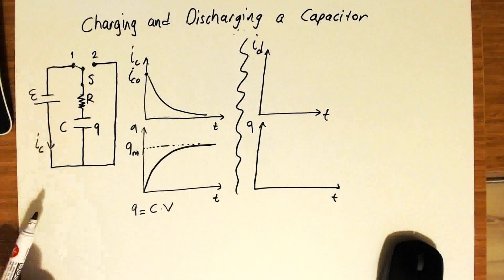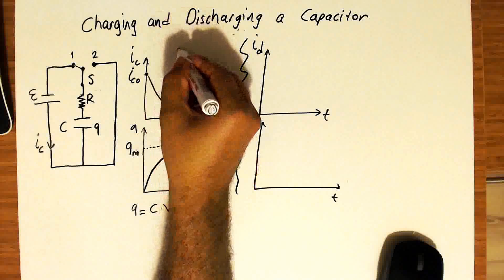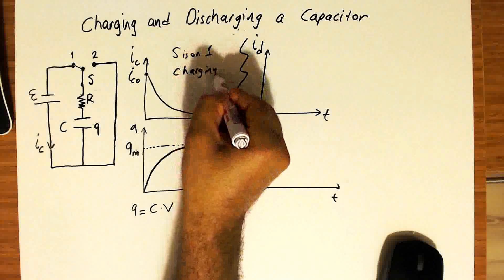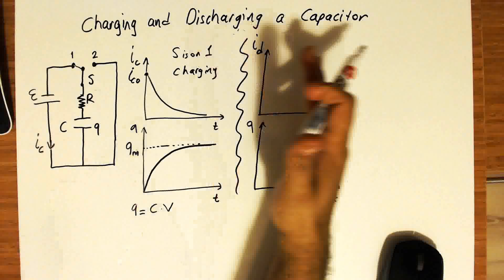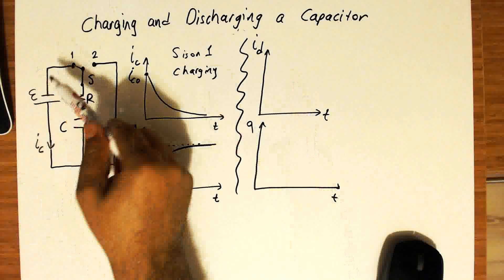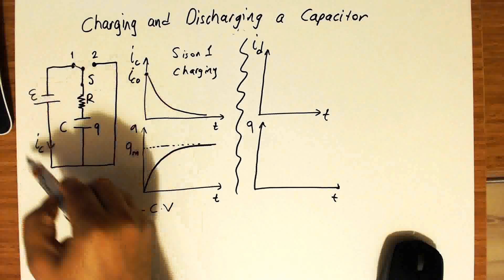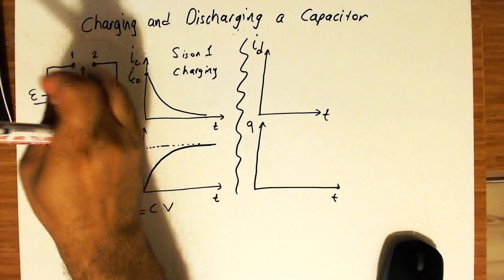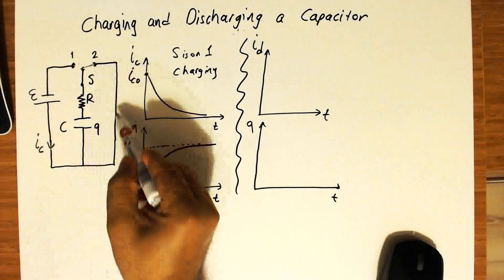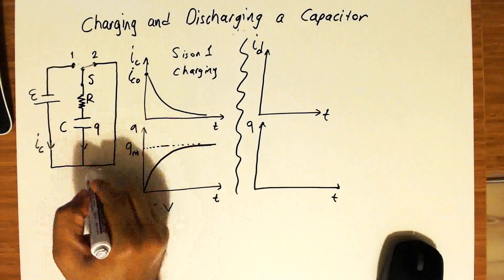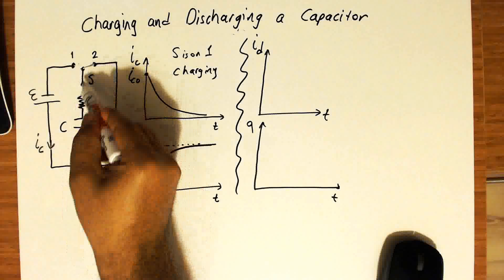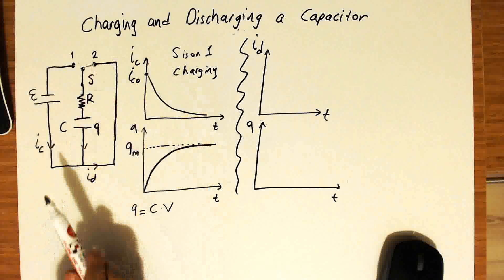This is the charging process when the switch is on position one. Next, two diagrams again show the current and charge value for the capacitor. But this time, after waiting long enough, we open the switch and connect it to the second position so that the current will flow in this direction. Let's call this current ID, the current through this half-loop, where D denotes the discharging process.